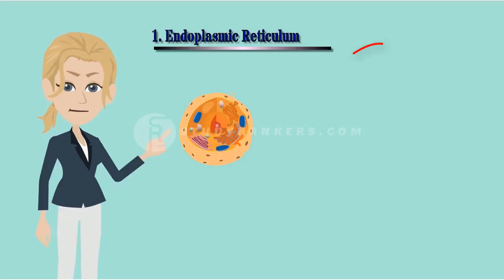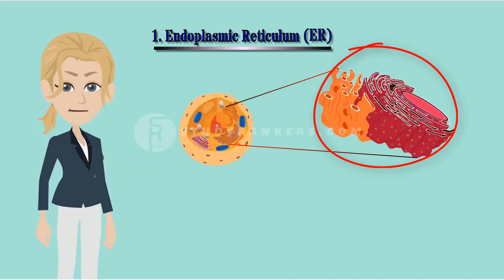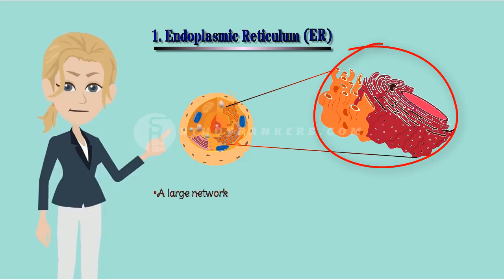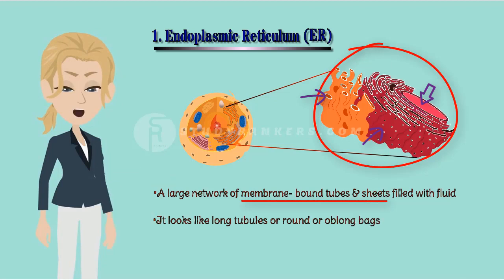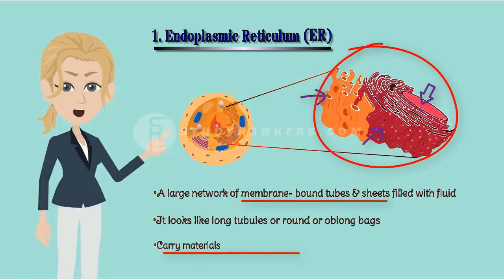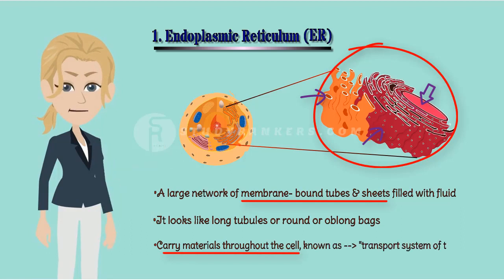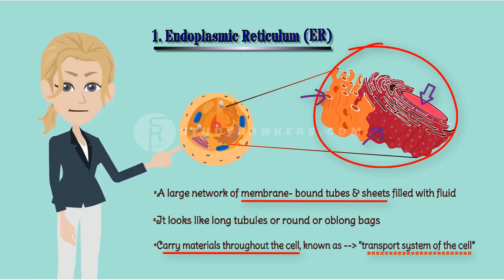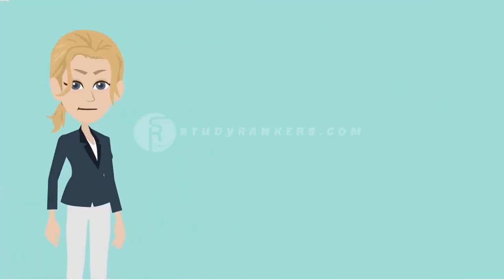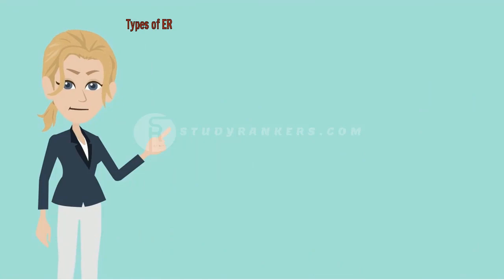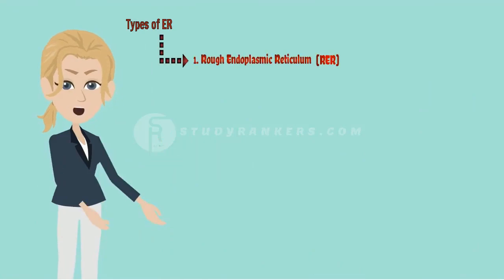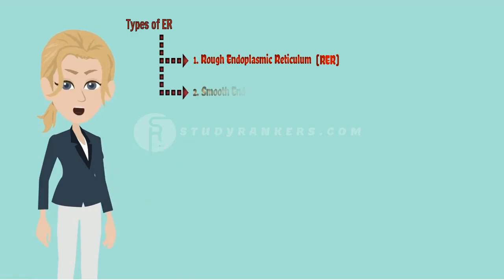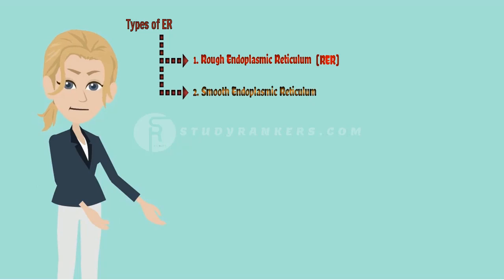Endoplasmic reticulum is a large network of membrane-bound tubes and sheets filled with fluid. It looks like long tubules or round or oblong bags. They carry materials throughout the cell, therefore known as the transport system of the cell. There are two types of endoplasmic reticulum: rough endoplasmic reticulum, denoted by RER, and smooth endoplasmic reticulum, denoted by SER.